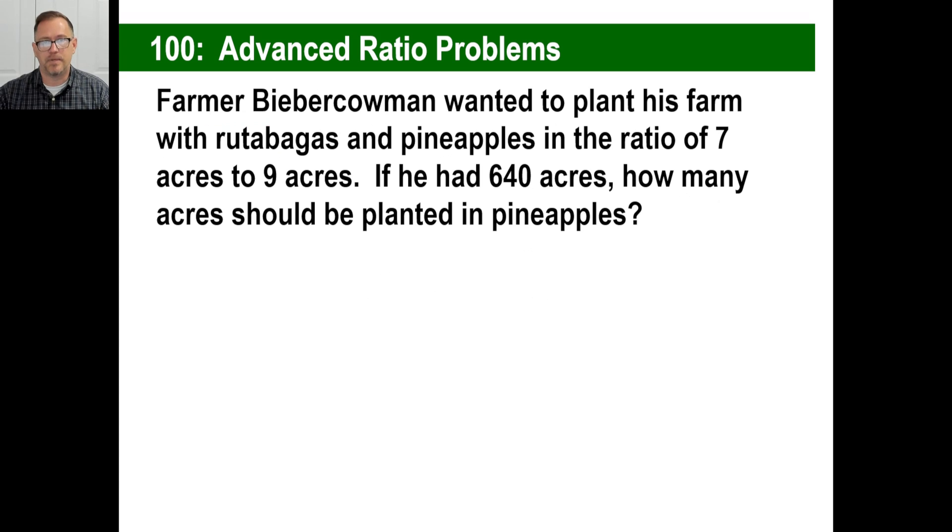Now, though, farmer Bieber Cowman wanted to plant his farm with rutabagas and pineapples in the ratio of 7 acres to 9 acres. If he had 640 acres, how many should be planted in pineapples? Let's stop right now. So, the ratio of rutabagas to pineapples is 7 to 9. Go ahead. Pause this thing right now. You write me something equals something with rutabagas and pineapples in the ratio of 7 to 9.